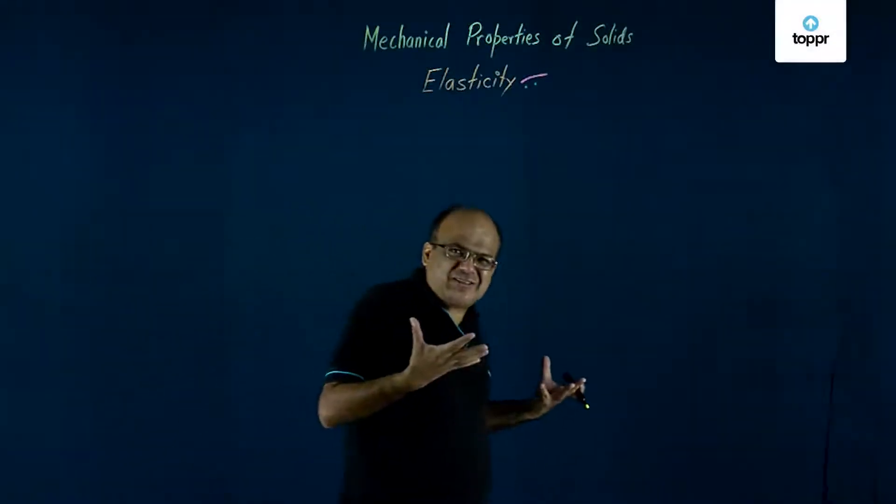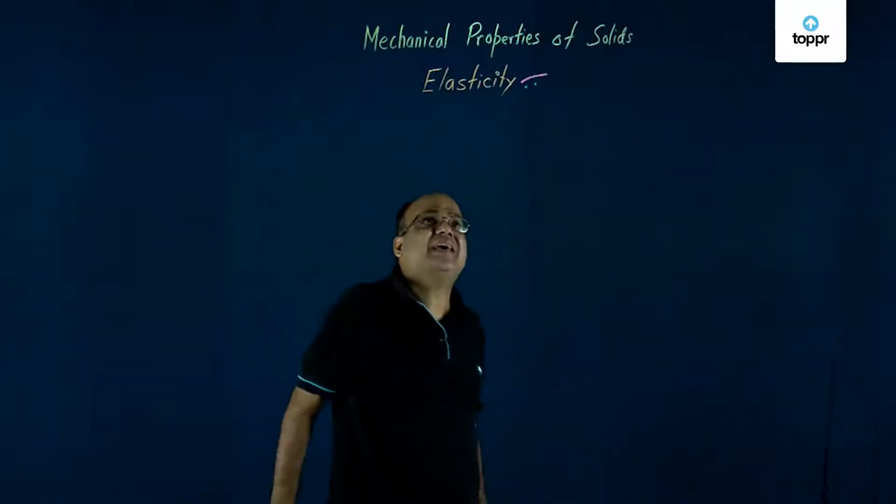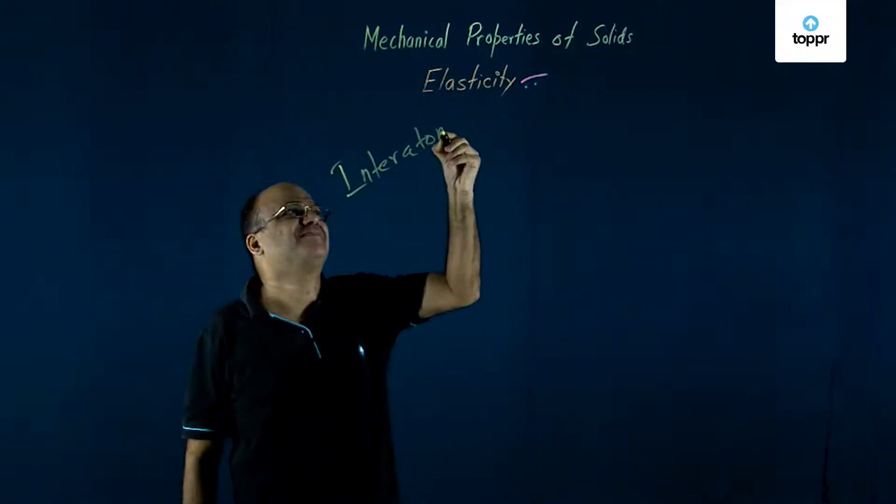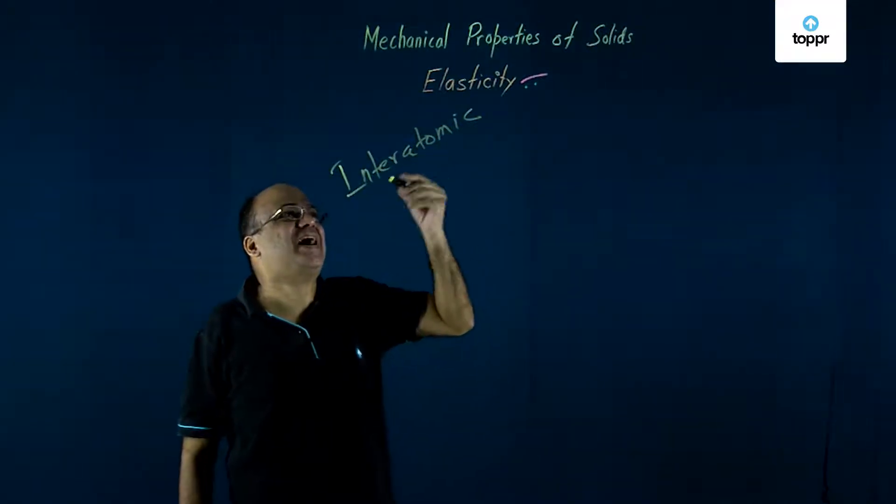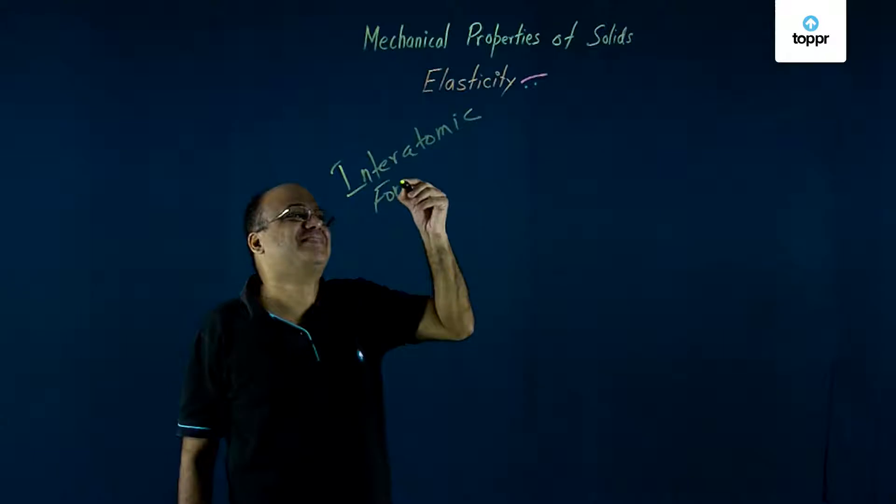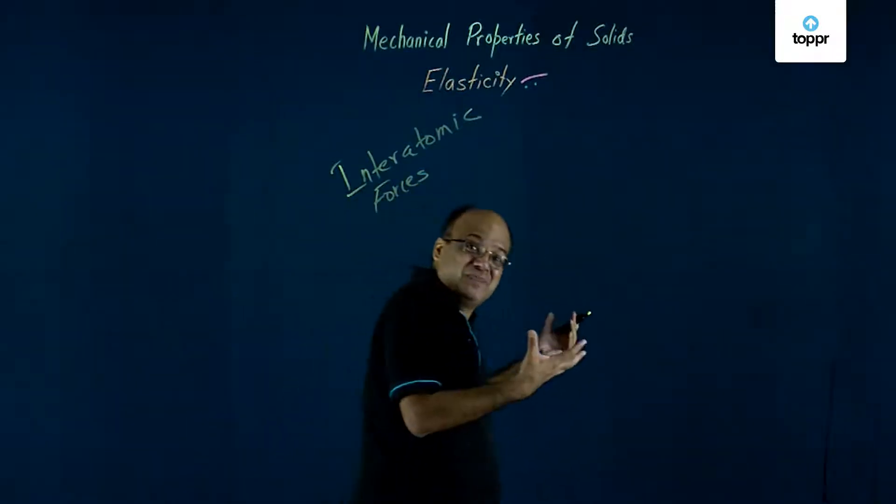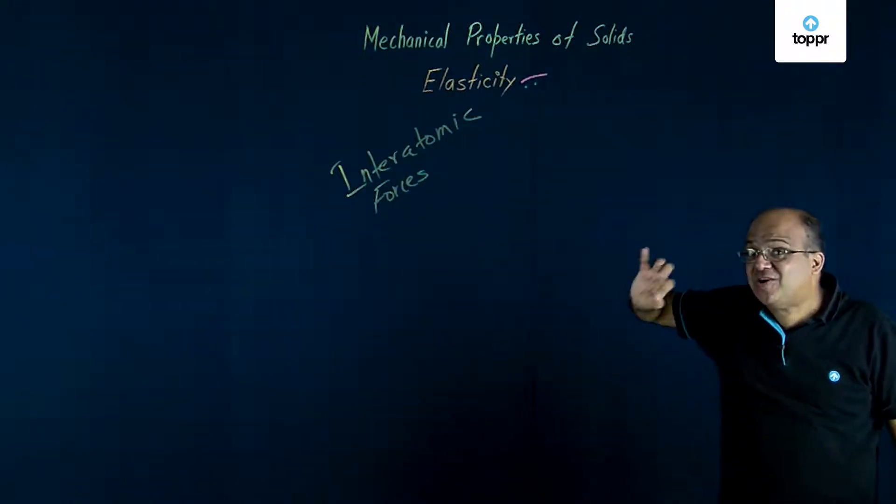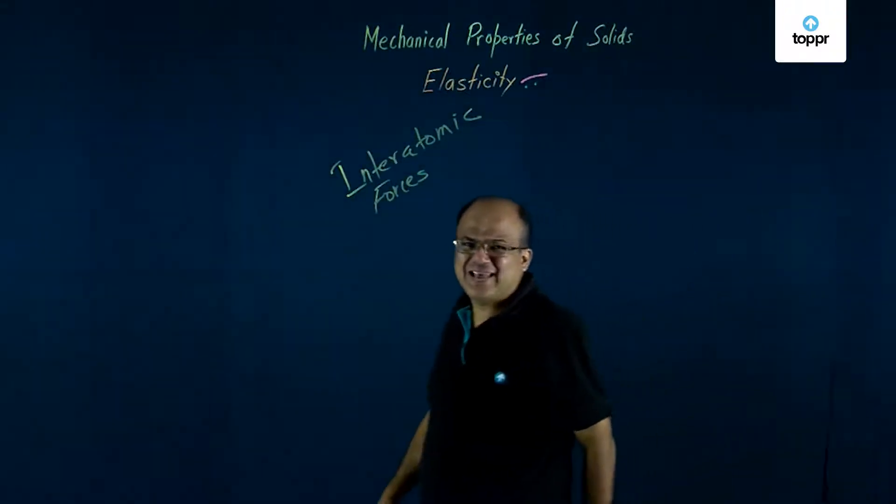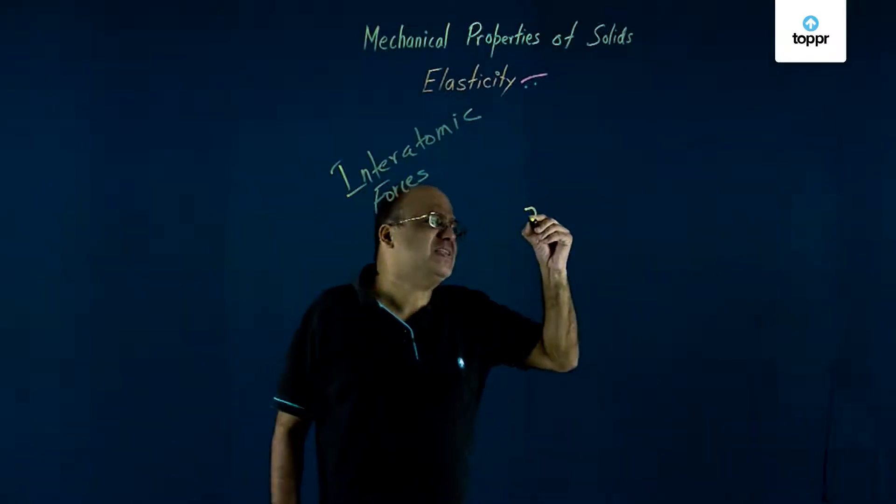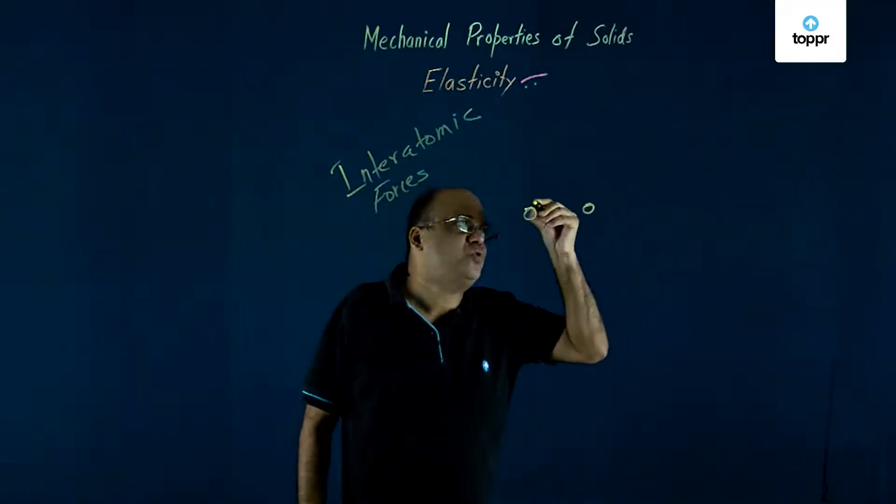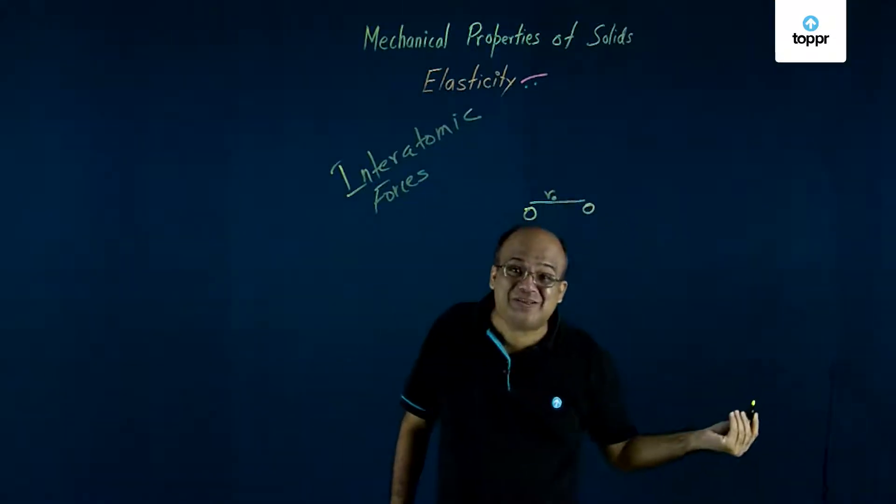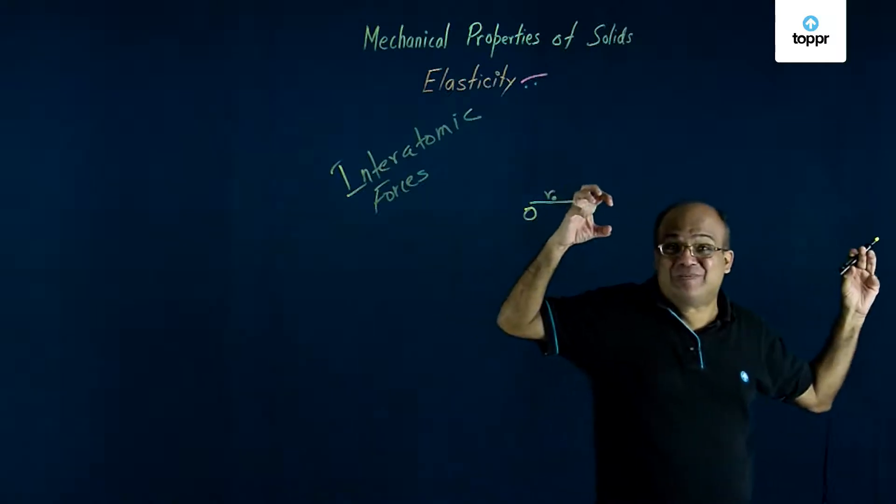Now we are going to try to understand elasticity in terms of interatomic forces. A solid has got atoms and there are interatomic forces, and we are going to try to understand elasticity based on this. These atoms in a solid they want to remain at a particular separation that we call normal separation or equilibrium separation.